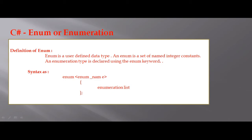We declare Enum using the Enum keyword. The Enum and class type is also a reference type. When we create a .NET application and need some specific numerical values, we can use Enum Type. We can use application-related numerical values to keep it easy, because Enum makes it a little easier to manage.